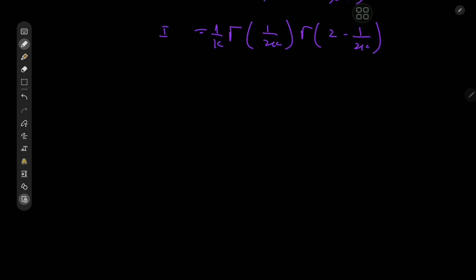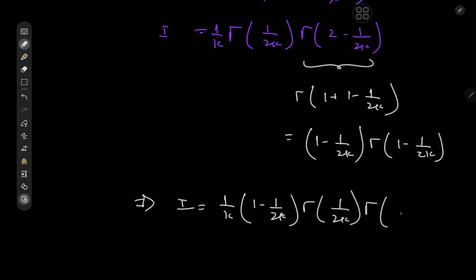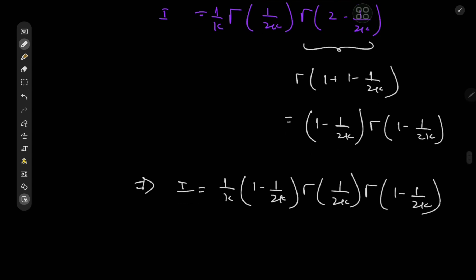Well, it turns out that the simplification is actually quite simple. We have this thing here, which is of course Γ(1 + 1 - 1/(2k)). So this thing by the recursion formula should equal (1 - 1/(2k))Γ(1 - 1/(2k)), which is pretty convenient because now we have I equal to (1/k)(1 - 1/(2k))Γ(1/(2k))Γ(1 - 1/(2k)).